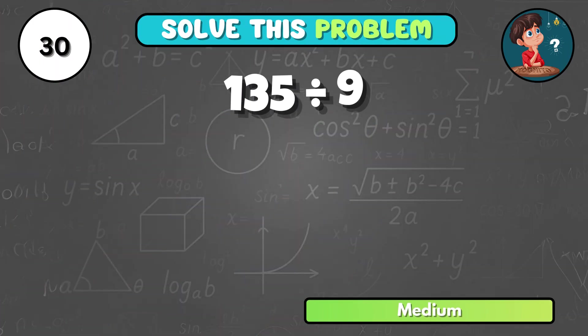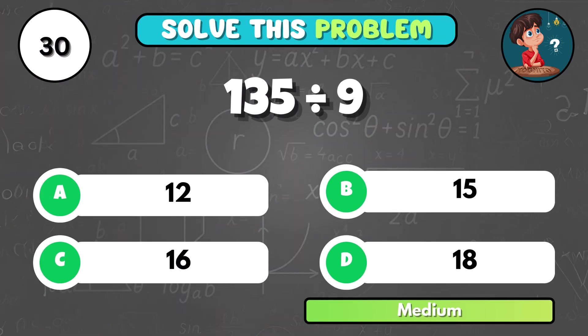Can you solve 135 divided by 9? That's B, 15.